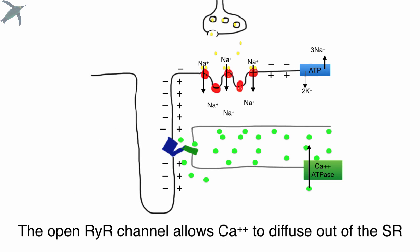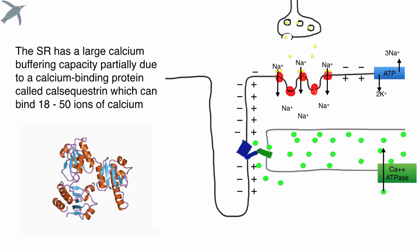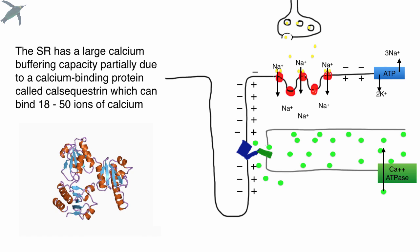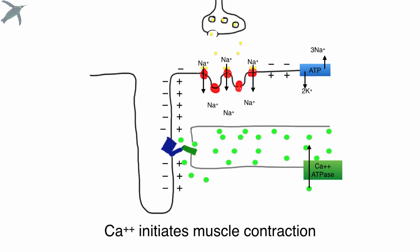Now once that ryanodine channel opens, calcium diffuses out of the sarcoplasmic reticulum, and floods into the cytosol. Most physiology textbooks don't tell you this, but, you know, Penguin Prof, you expect a little bit more. It's not really just diffusion. There's a really important protein in the SR called calsequestrin, which acts as a big buffer for calcium. So 18 to 50 ions of calcium can bind onto this thing. So it really is more than just diffusion, which accounts for the amazing ability of the SR to hold, and then release calcium fast enough for all of this to work. Okay, so calcium then floods out into the cytoplasm, and muscle contraction can begin.